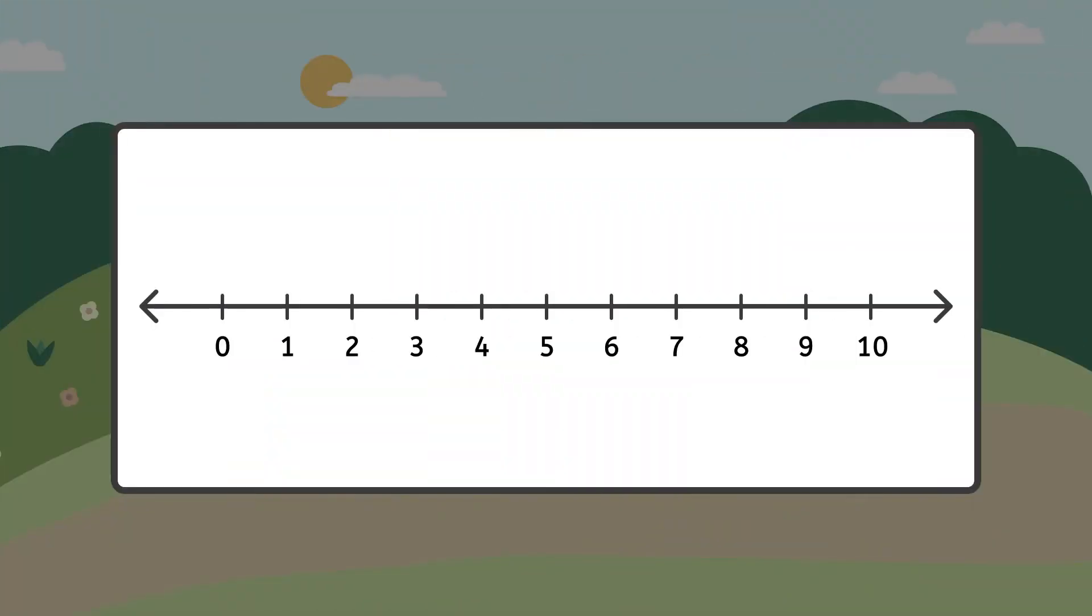Here is our number line. Now, let's find the number that is one more than six. Will we need a Forward Frog hop or a Backward Bunny hop to find out which number is one more than six? Great! We will need to hop forward like a frog to find out that seven is one more than six.